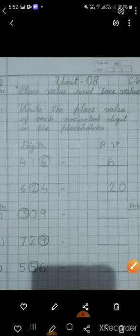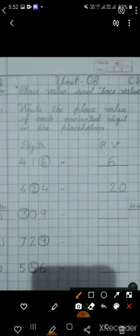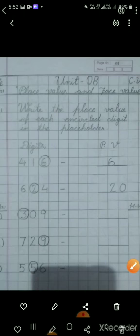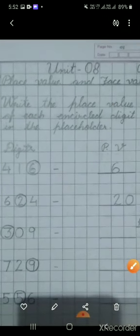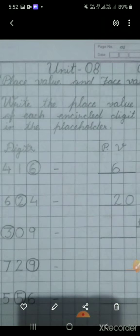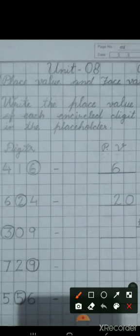Now, you will have to write question number 1. You can see here, question is written. Write the place value of each encircled digit in the place holder.